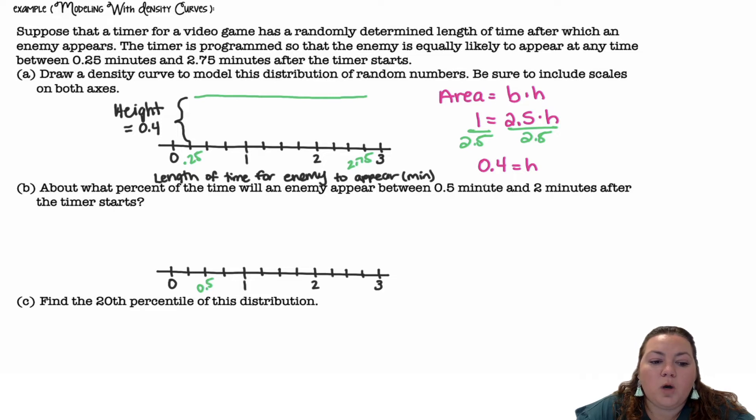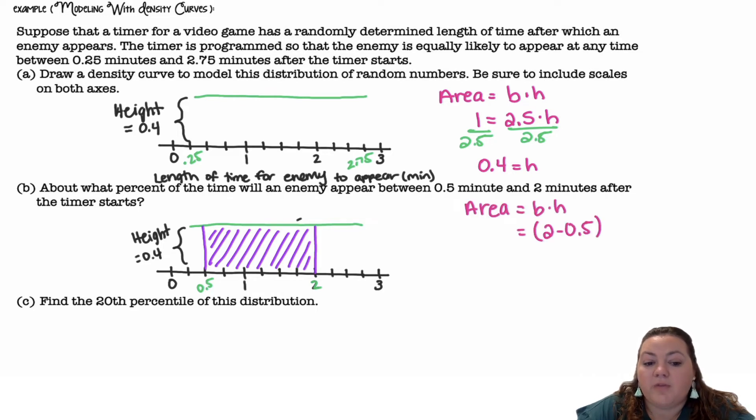About what percent of the time will an enemy appear between 0.5 minutes and 2 minutes after the timer? So I'm using my same model going from 0.25 to 2.75. But then I want the area between 0.5 minutes and 2 minutes. So I want this area in between. Area of a rectangle is base times height. This time I want that area, not everything under there, just that area. Well, the length or the base is 2 minus 0.5 times the height of 0.4. So 1.5 times 0.4 is 0.6 or 60%.